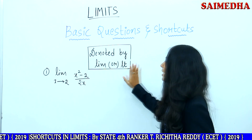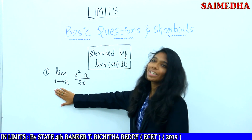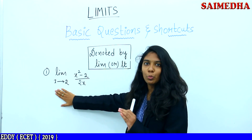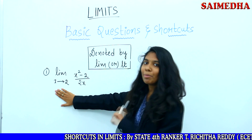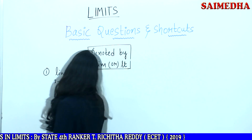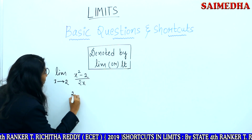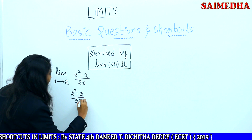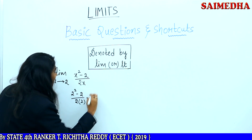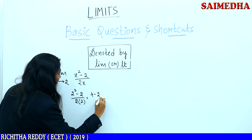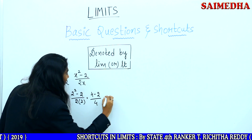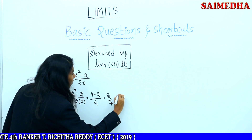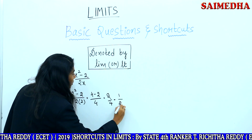Let us see one problem. First one: limit x tends to 2. It means that x is tending to 2. Now substitute 2 in the place of x. 2 squared minus 2 by 2 into 2, which equals 4 minus 2 by 4, which equals 2 by 4, which equals 1 by 2.